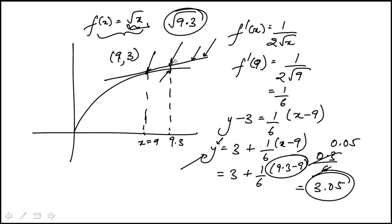That's the approximation. That's essentially this y value that I get from the tangent line. The actual function is below it. But if it's close enough, that's an approximation. So the answer is 3.05.